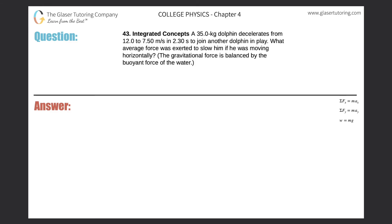Number 43, Integrated Concepts. A 35 kilogram dolphin decelerates from 12 to 7.5 meters per second in 2.3 seconds to join another dolphin in play. What average force was exerted to slow him down if he was moving horizontally?